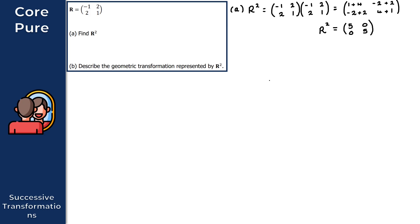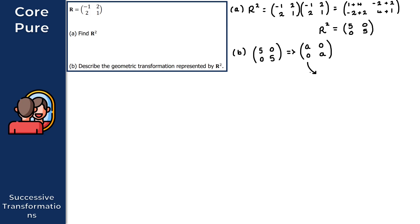For part B, it says describe the geometric transformation represented by R squared. R squared gives us the matrix [[5, 0], [0, 5]]. This is of the form [[A, 0], [0, A]], and this matrix represents an enlargement.